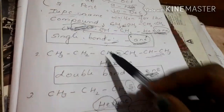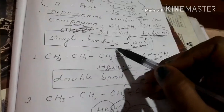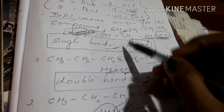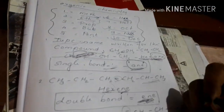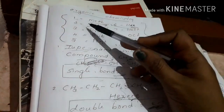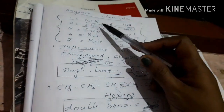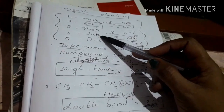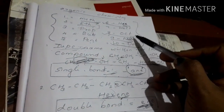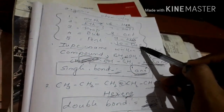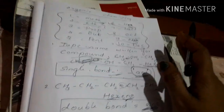Now, how many questions do you think about this? If you want to learn how to complete these portions, I will tell you. The 1-10 number prefixes are: meth, eth, prop, but, pent, hex, hept, oct, non, dec. If you want to complete it, no compromise.